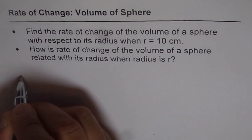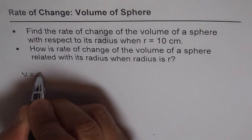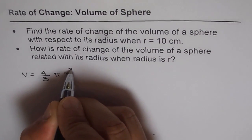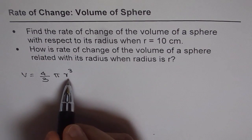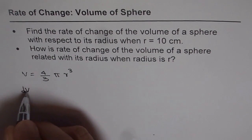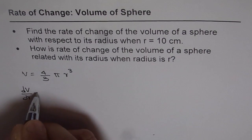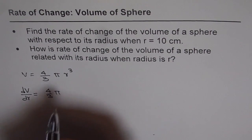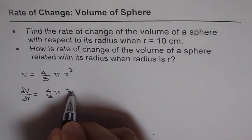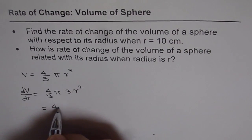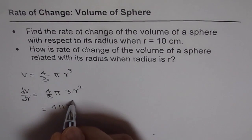As you know, volume of a sphere is given by V equals 4/3 π r³. Volume is a function of radius, so we can always find rate of change of volume with respect to radius — that is dV/dr. So, dV/dr is 4/3 π times 3r², which simplifies to 4πr².